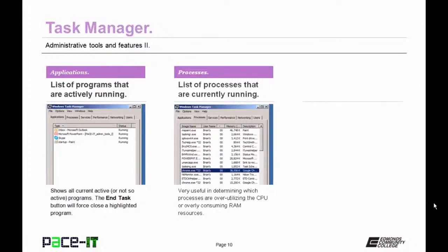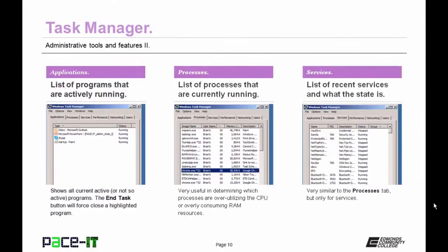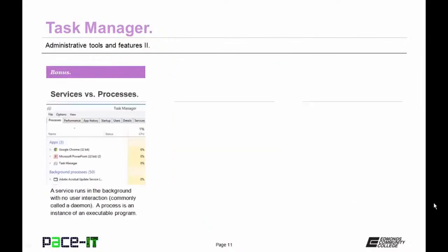The Processes tab shows what processes are currently running on a Windows PC — very useful in determining which processes are over-utilizing the CPU or consuming too much RAM. The Services tab does the same thing for services and is similar to the Processes tab.